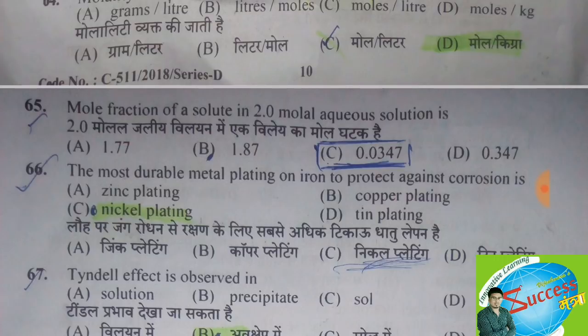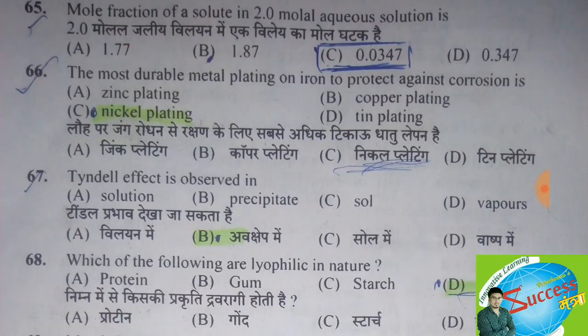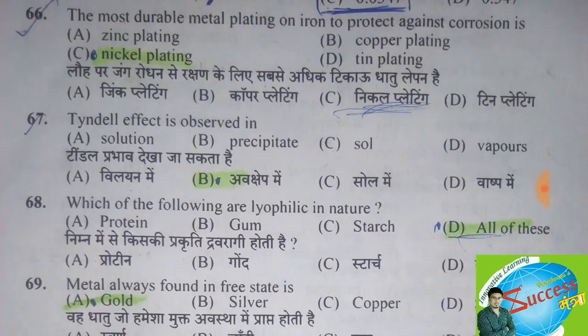The most durable metal plating on iron to protect against corrosion — the correct answer is option C, nickel plating. However, zinc plating is done by the process of galvanization, which is aimed to make iron more durable. Tyndall effect is observed in — the correct answer is option B, precipitate.